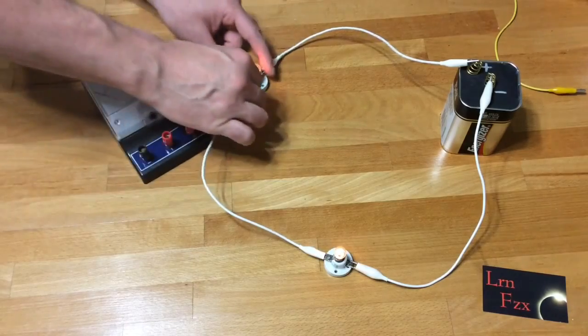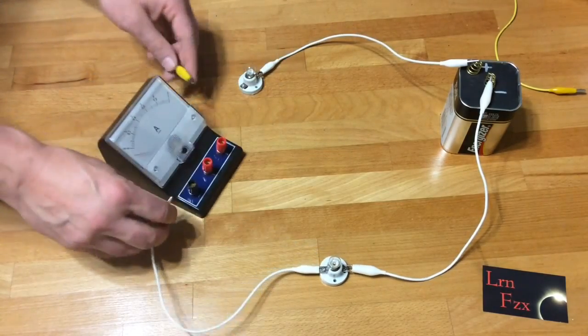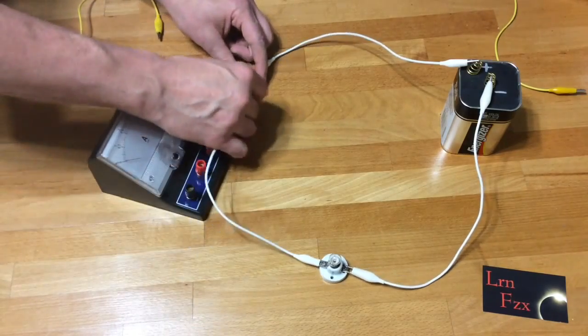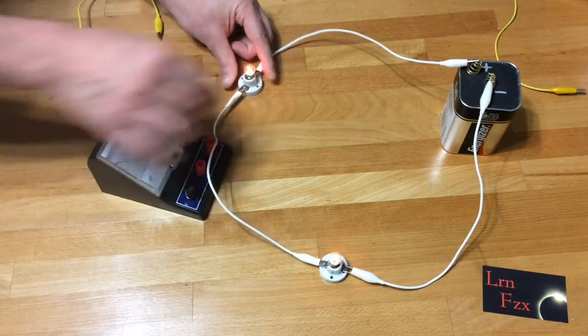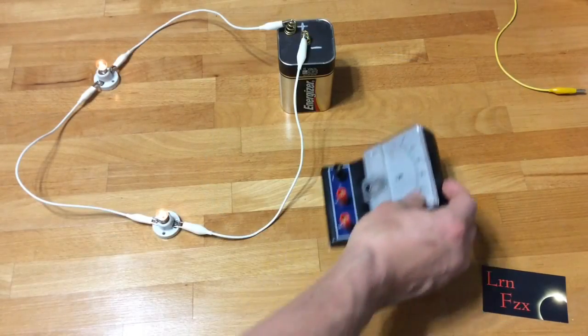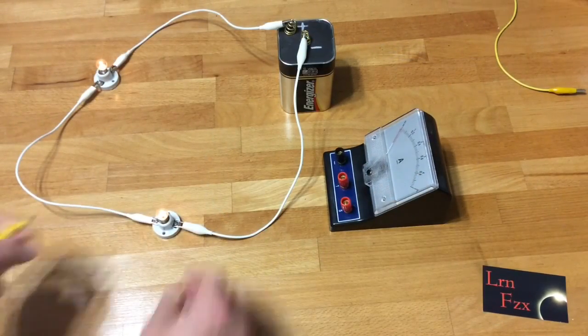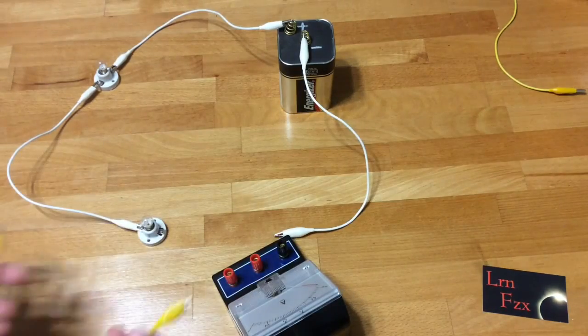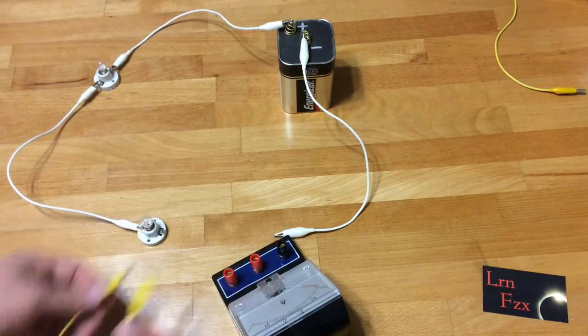Now measure the current in between the two bulbs by disconnecting one of those two points and connecting the ammeter in between. Now the current for the third point in that circuit at the negative terminal of the battery. Disconnect one of those two points, put the ammeter in there, measure the current.